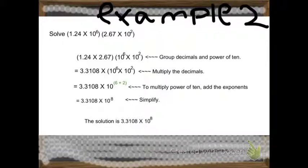we multiply 1.24 times 2.67, and also multiply 10 to the 6th power times 10 to the 2nd power, to group them.